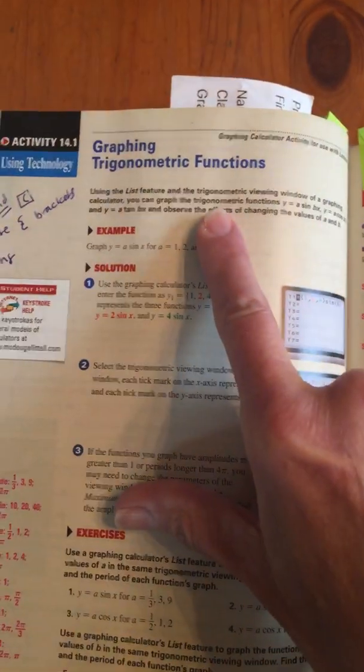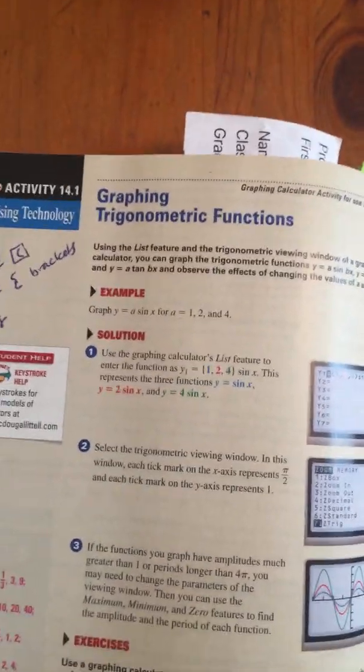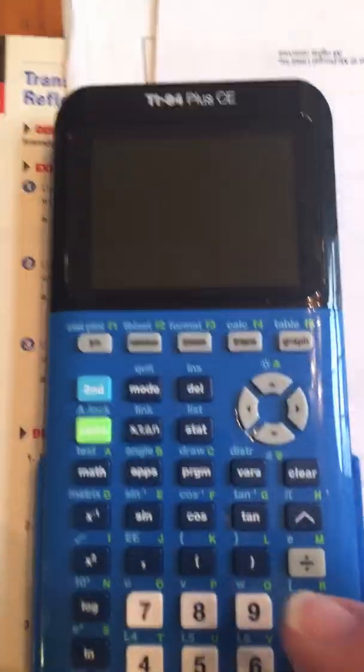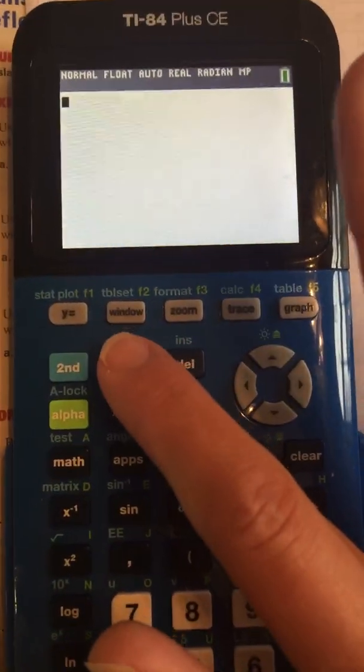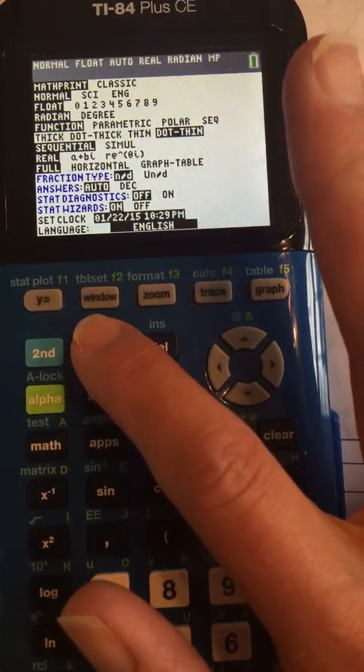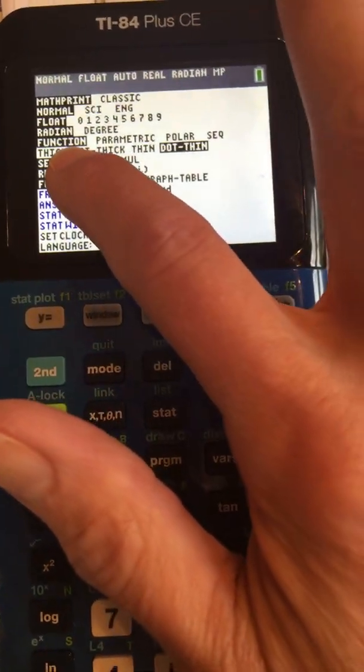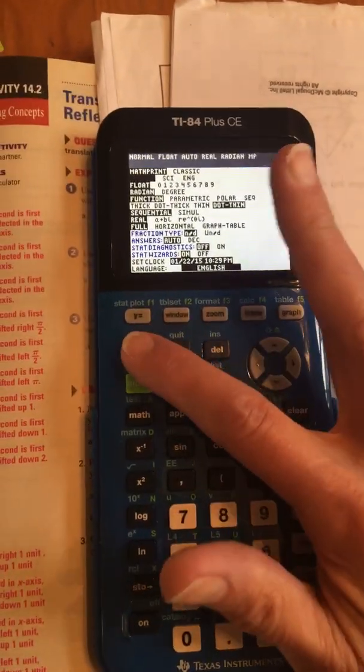Now we're going to be graphing trigonometric, I can say it, functions, and I'm going to show you two different ways to do it. Alright, so we're going to turn on our calculator. On our last video we were doing the parametric, so just make sure you've put your calculator back on function for your mode.